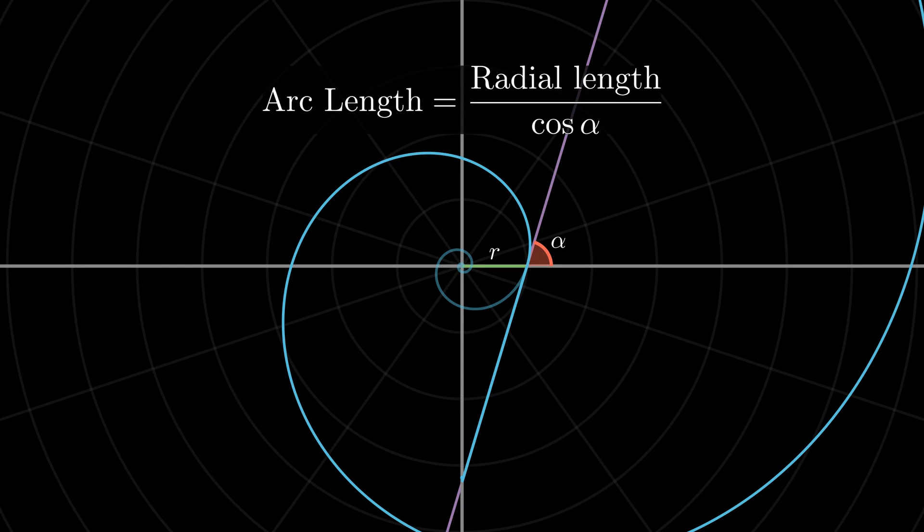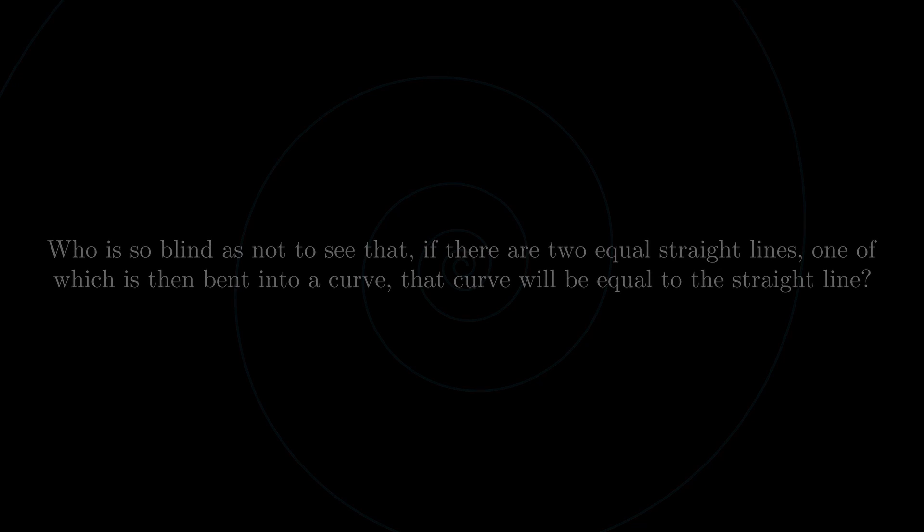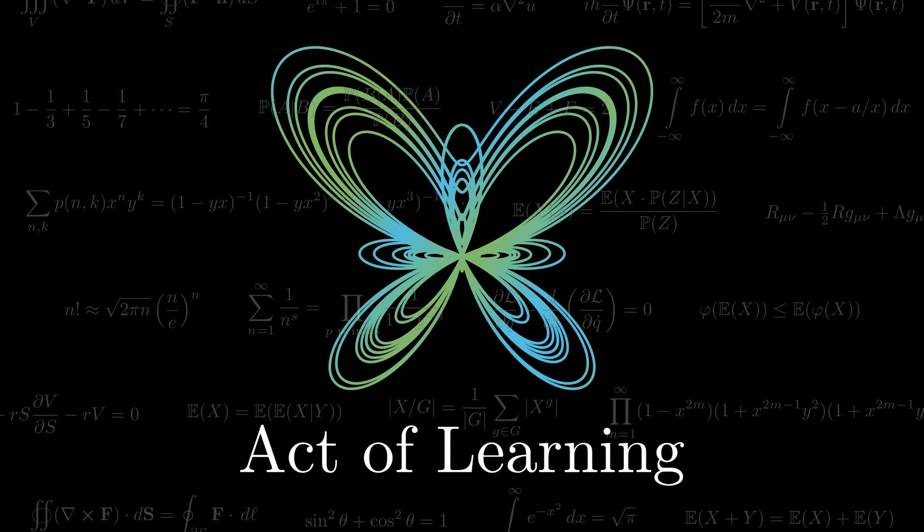Galileo said of this result: "Who is so blind as not to see that, if there are two equal straight lines, one of which is then bent into a curve, that curve will be equal to the straight line?" Hope you enjoyed the discussion. See you in the next video.